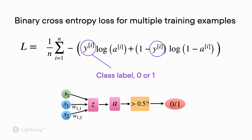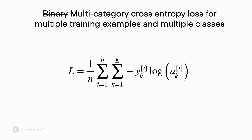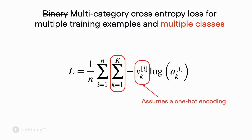Since we only had a binary classification task in unit three, the class labels were either zero or one. Now here is the multi-category cross entropy loss that we need for our softmax regression model, so that it can deal with more than two classes. First, again we have a summation term over the multiple training examples — exactly the same summation term used before. In contrast to the binary cross entropy, we also have a second summation term that sums over all the class labels, up to k class labels.